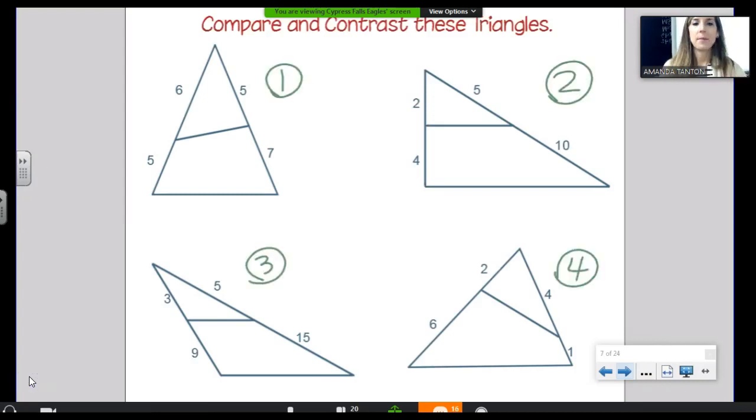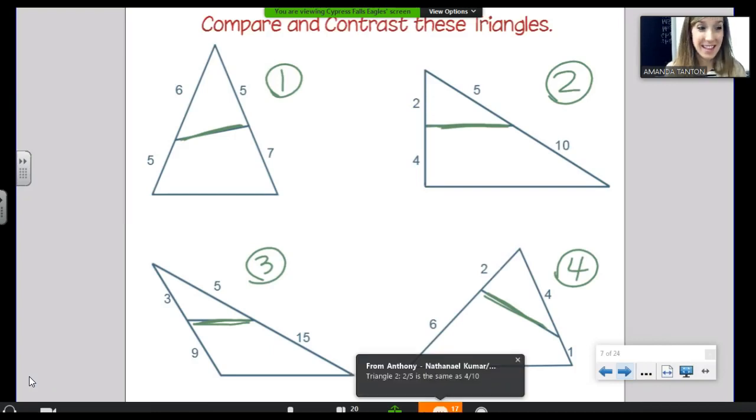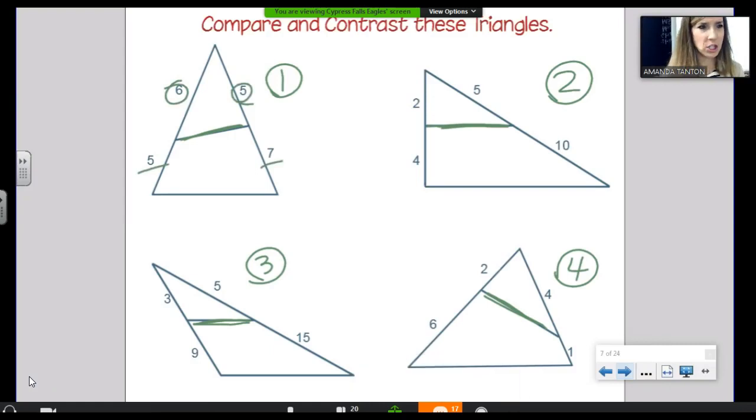Okay. If I said that this segment splits some of the triangle sides proportionally, which ones does that segment split the sides proportionally? Which triangles? Two and three. Two and three. Yeah. Because if you look at it right away, six is to five as five is to seven. No. That's not a true proportion. Those ratios are not equal.